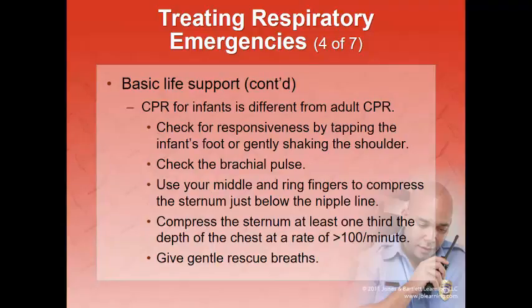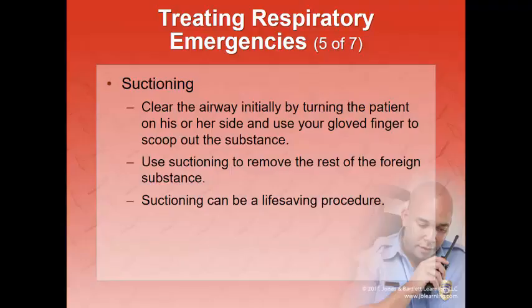Shake and shout just as you would for an adult. If there's no breathing or movement, check the brachial pulse for infants or the carotid for children. Use two fingers or two thumbs one finger-width below the nipple line, compressing the lower half of the sternum one-third to one-half the chest depth at a rate of at least 100 per minute — counting 'one and two and three...' gives about 110 per minute. One rescuer uses a 30:2 ratio; two rescuers use 15:2. Give only enough air with rescue breaths to make the chest rise — small, gentle breaths.